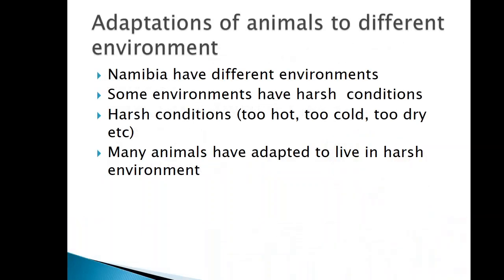Under living organisms, we are going to focus on the adaptations of animals to different environments. If you remember when we talked about ecosystems, we said that different ecosystems have different environments. Some of those environments have harsh conditions — referring to environments that are too cold, too hot, or even too dry. Animals have to find ways to adapt to these harsh environments. Today we are going to discuss four animals and find out how they adapt to their environment.